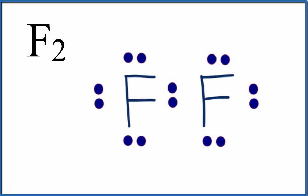So here's the Lewis structure for F2. When we look at this structure here, we can see that we have two of the same type of atoms, two fluorine atoms.